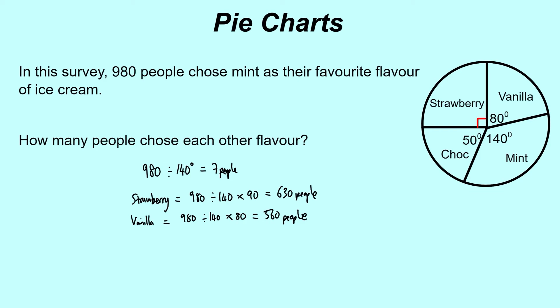We've got strawberry, we've done vanilla, we've got chocolate to go. So chocolate would be the same idea: 980, we're dividing it by 140, and we're multiplying by 50. That gives us 350 people.